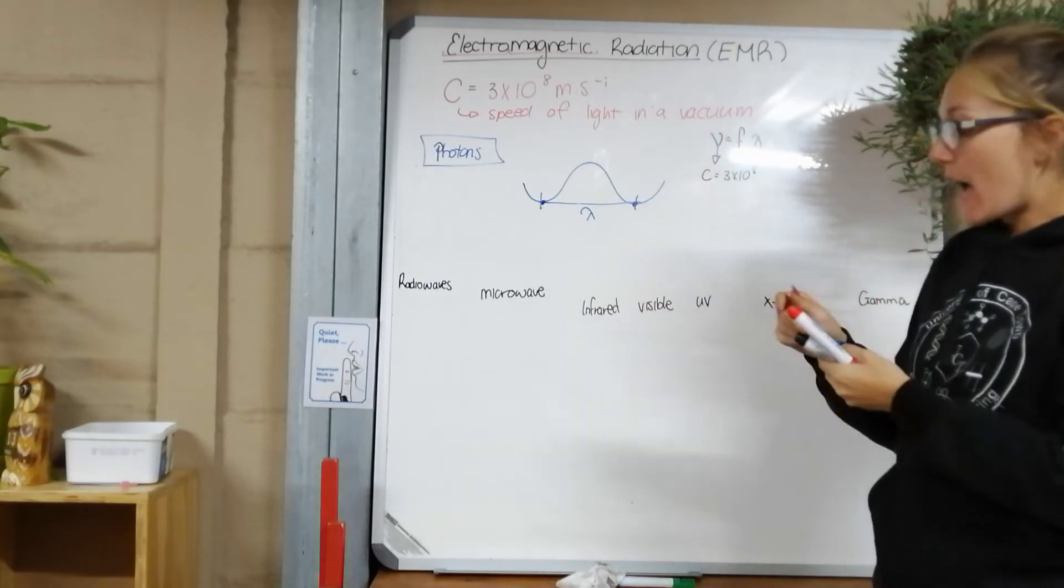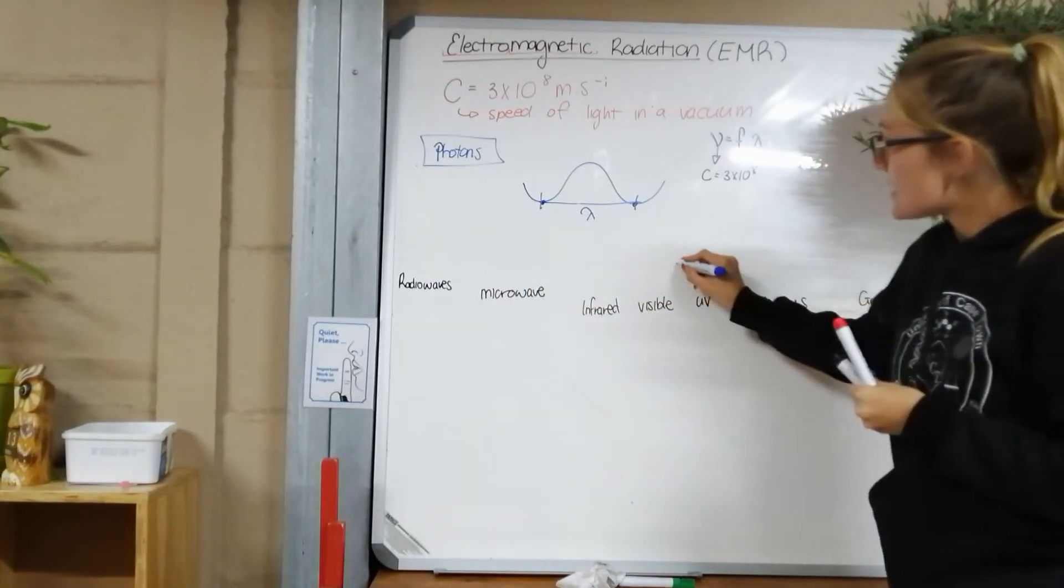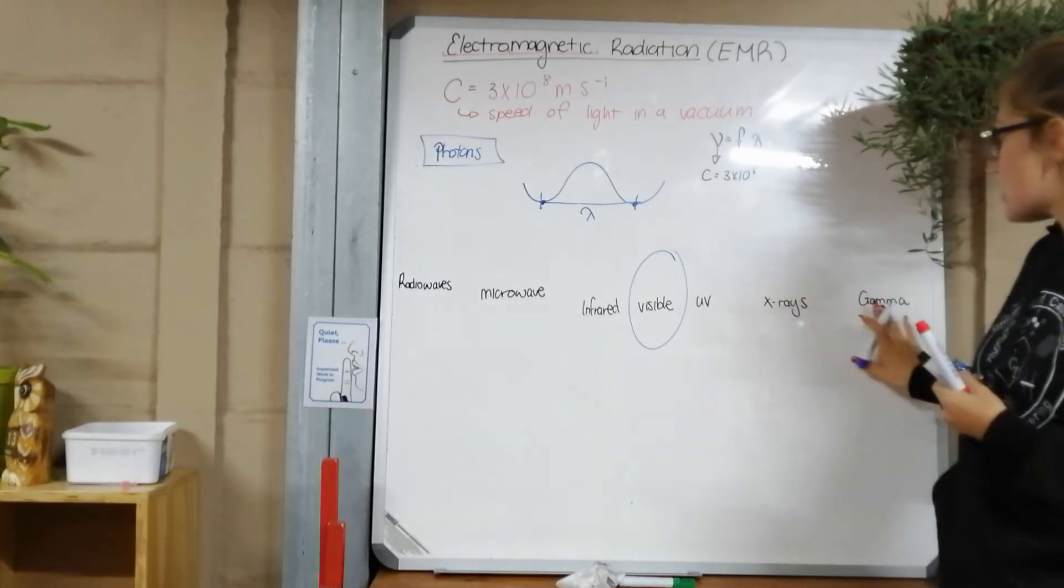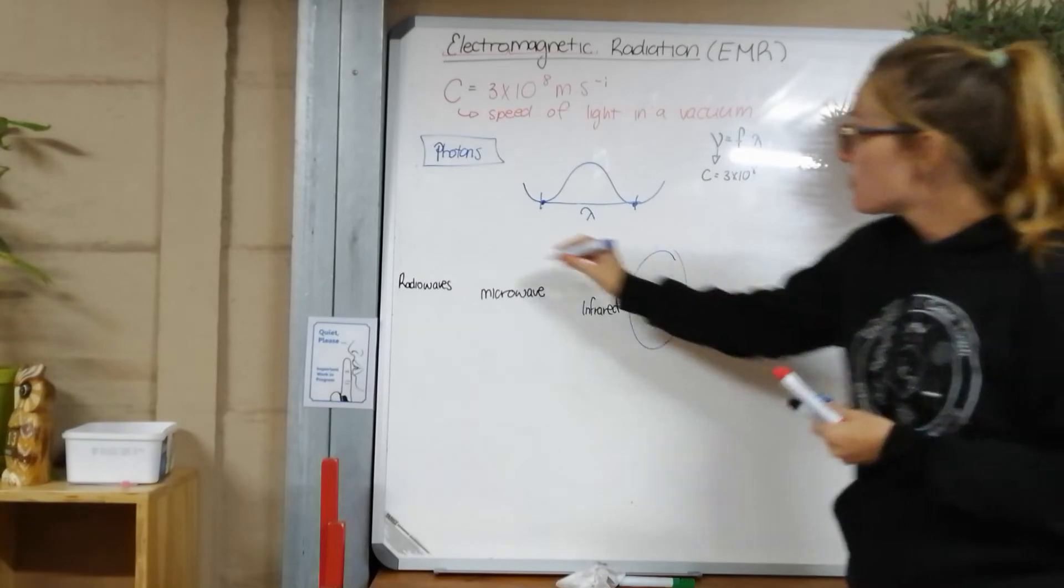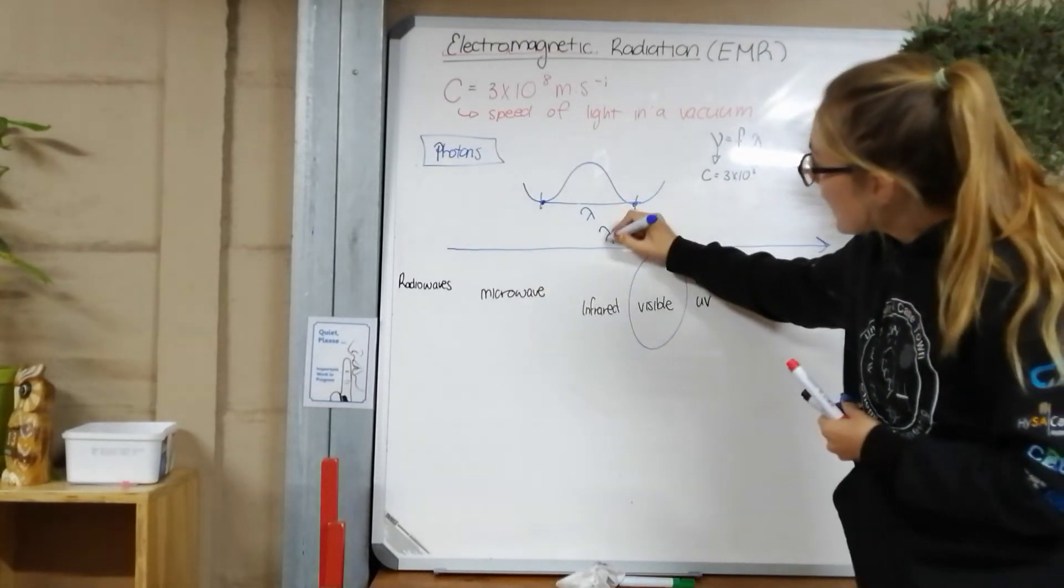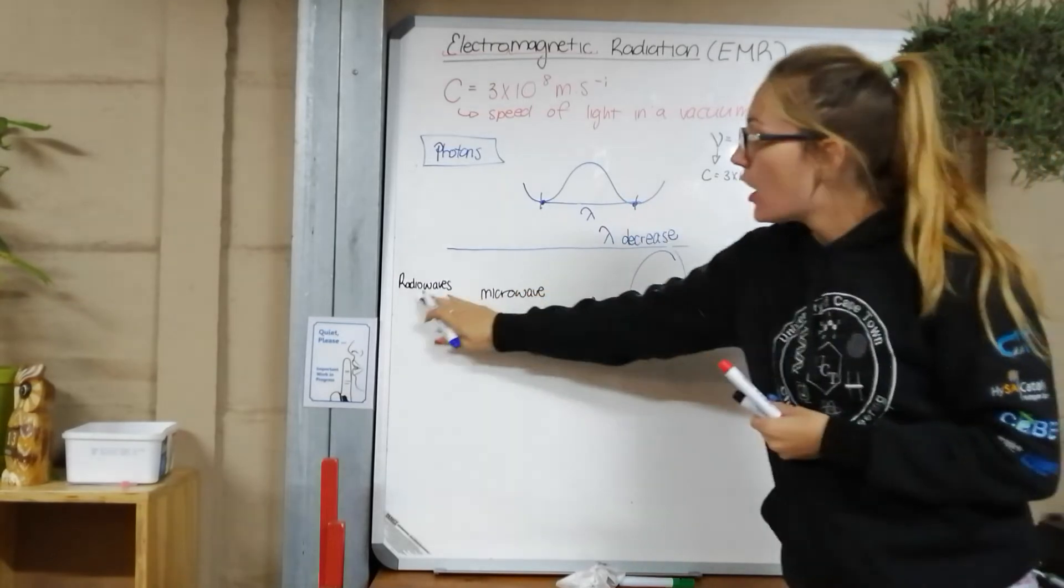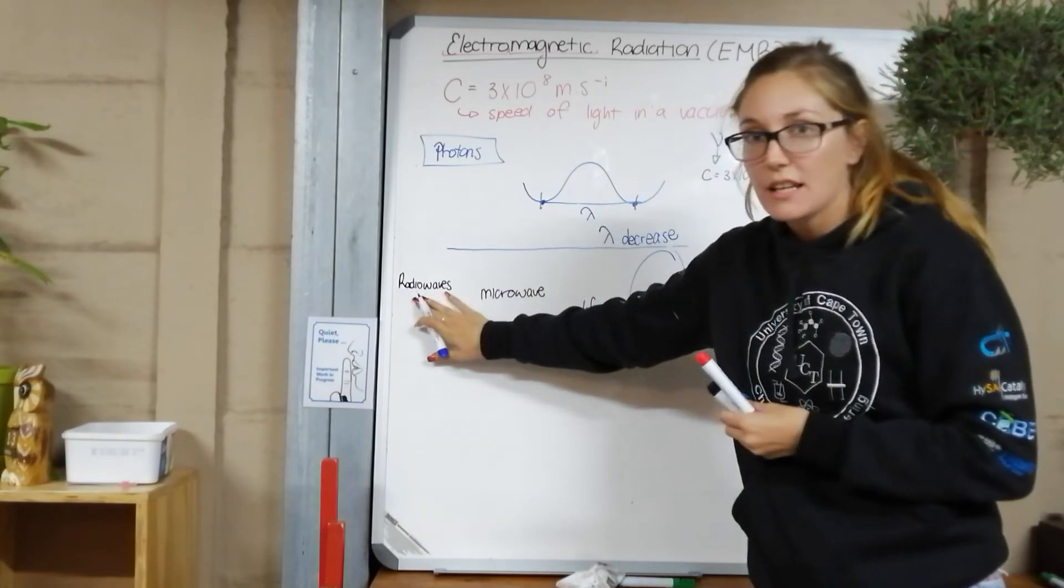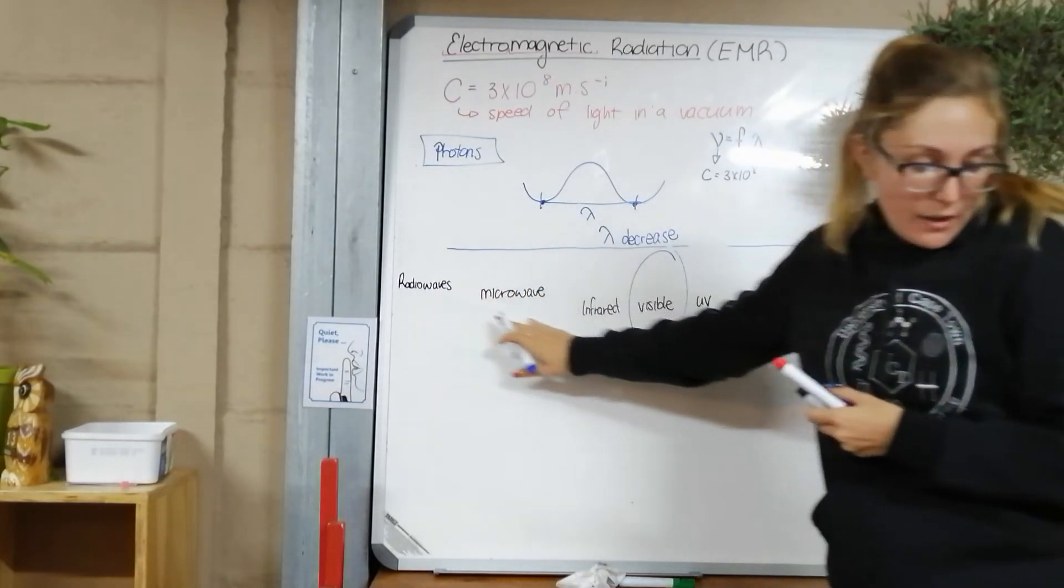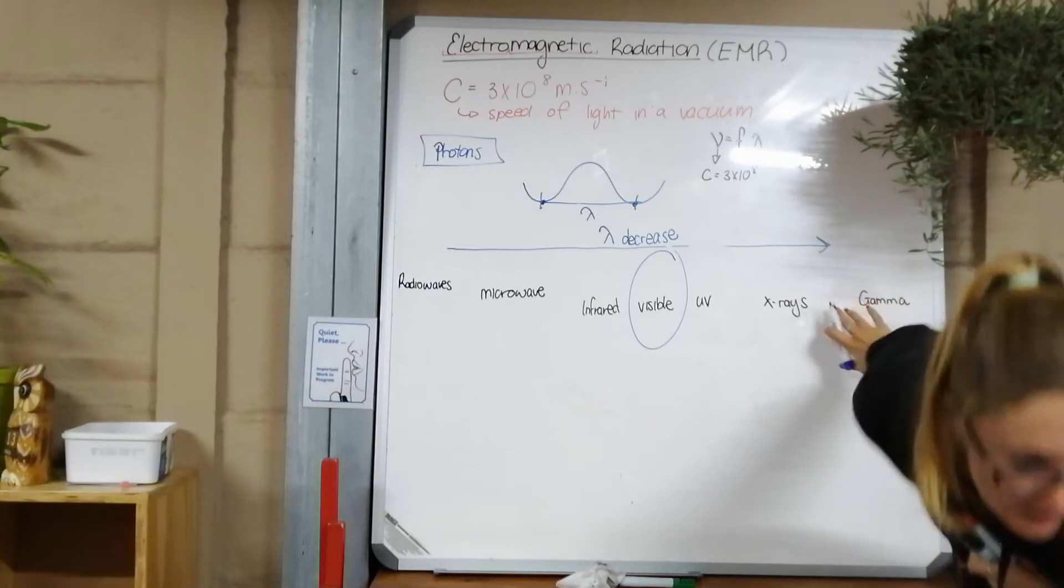Now, as we go from radio waves across microwaves, infrared, visible light, this is the light that we can see, the electromagnetic radiation that we can actually perceive, UV rays, X-rays, and gamma rays. As we move from left to right on the electromagnetic spectrum, our wavelength decreases. So we start with the largest wavelength. Radio waves have the biggest wavelength of approximately a meter. Down to gamma rays, which is times 10 to the negative 13 meters. Very small wavelength of gamma rays.